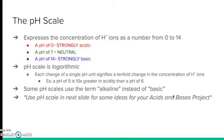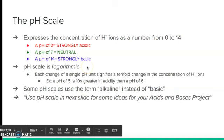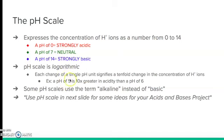The last thing we're going to cover in this video is the pH scale. pH stands for 'power of hydrogen' and expresses the concentration of hydrogen ions on a scale from 0 to 14. A pH of 0 indicates a strong acid, a pH of 7 is neutral, and a pH of 14 indicates a very strong base. The pH scale is logarithmic, which means a difference of one pH unit is not just one — it's actually a tenfold difference. So it's a tenfold, hundredfold, or thousandfold change depending on the difference in pH values.